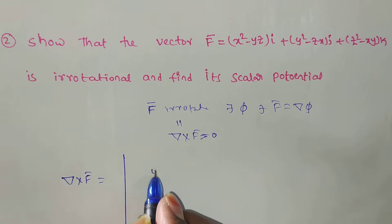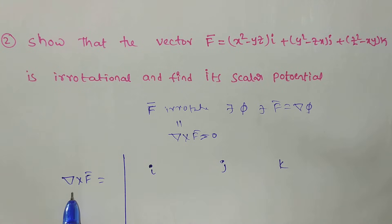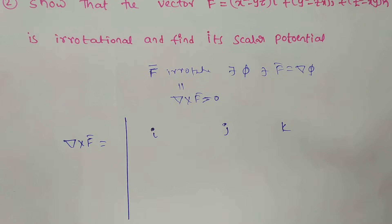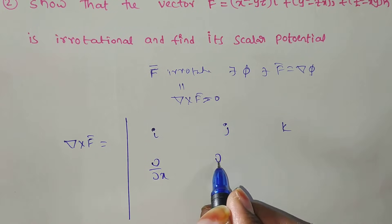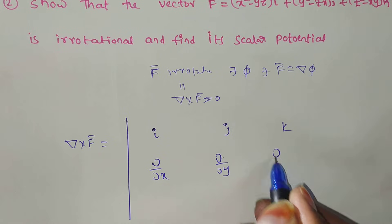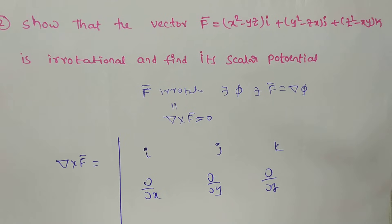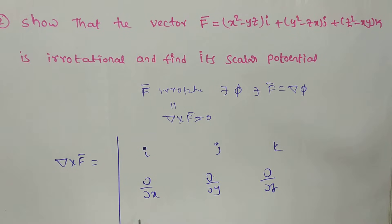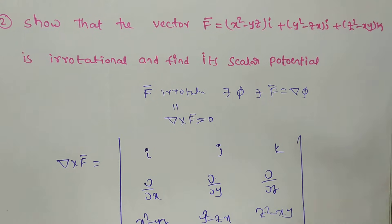We set up the determinant with i, j, k. In the del vector differential operator, the i-component is ∂/∂x, j-component is ∂/∂y, k-component is ∂/∂z. In f̄, the i-component f1 = x² − yz, j-component f2 = y² − zx, k-component f3 = z² − xy.